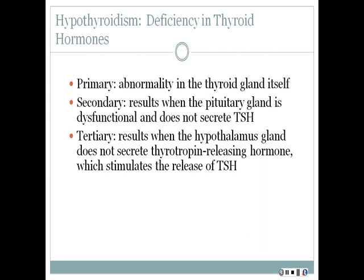There are three different types of hypothyroidism, which is a deficiency of thyroid hormone. Primary is an abnormality in the thyroid gland itself. Secondary results when the pituitary gland is dysfunctional and does not secrete enough thyroid stimulating hormone. Tertiary results when the hypothalamus does not secrete thyroid releasing hormone, which stimulates the release of TSH. Signs and symptoms can include cold intolerance, unintentional weight gain, depression, dry brittle hair and nails, fatigue, and constipation.